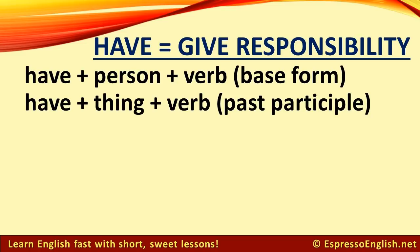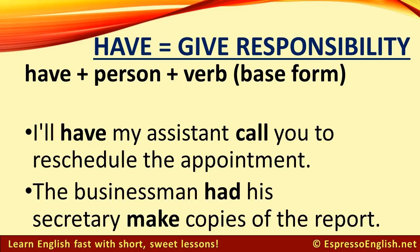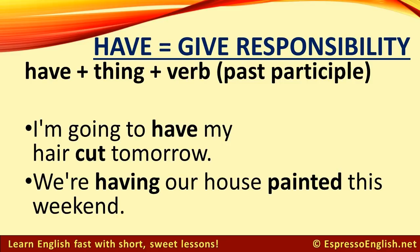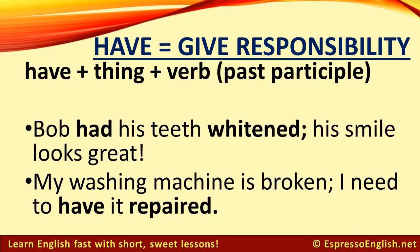Or we can have something done — have plus the thing plus the verb in the past participle. For example: I'll have my assistant call you to reschedule the appointment. The businessman had his secretary make copies of the report. I'm going to have my hair cut tomorrow. We're having our house painted this weekend. Bob had his teeth whitened — his smile looks great. My washing machine is broken; I need to have it repaired.